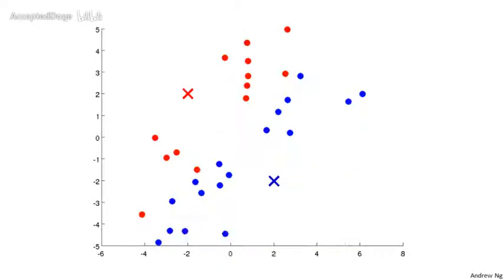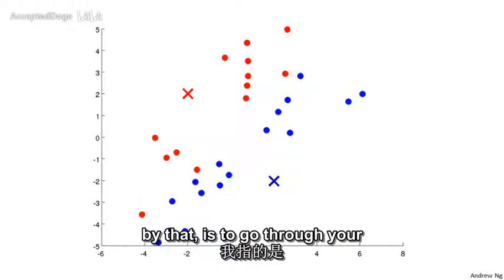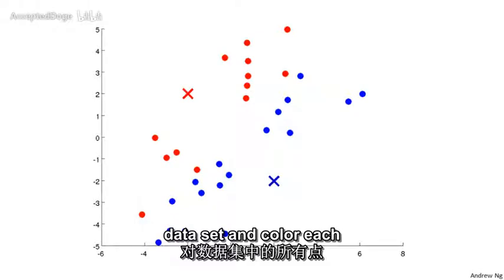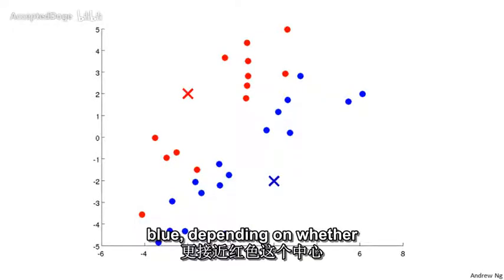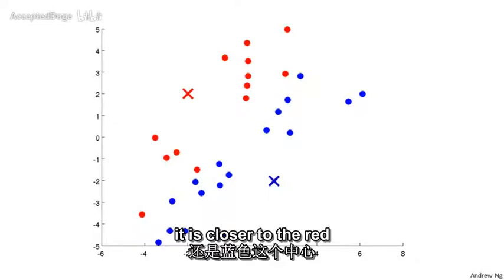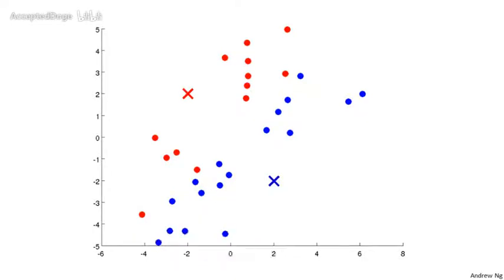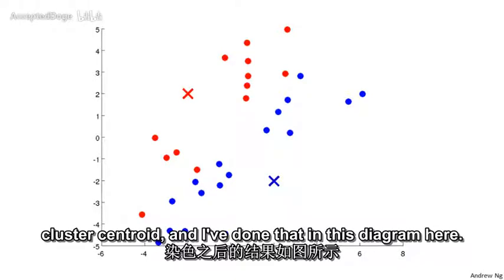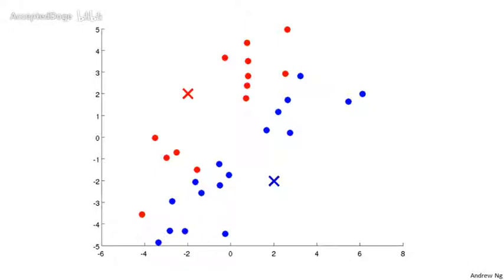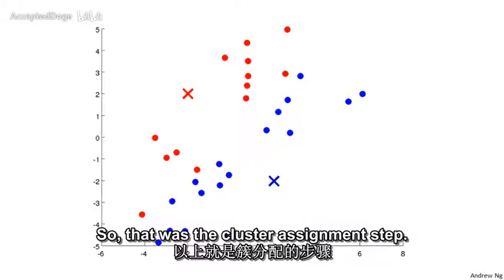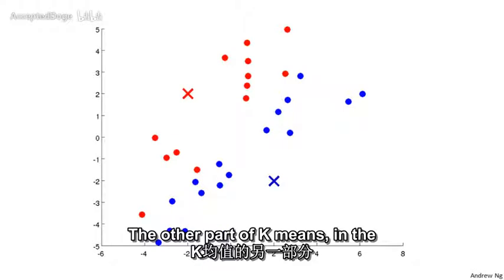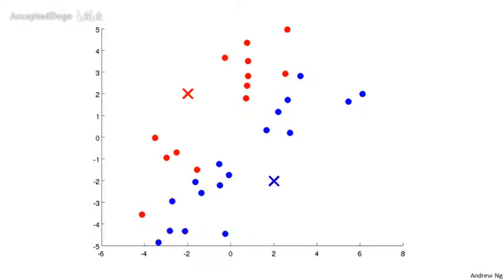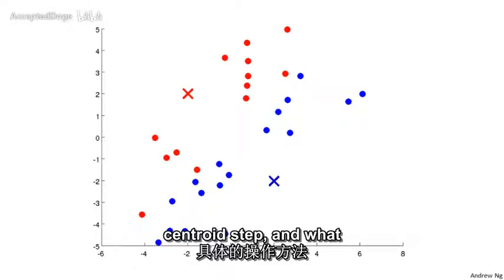Specifically, it's going to go through your data set and color each of the points either red or blue, depending on whether it's closer to the red cluster centroid or the blue cluster centroid. That was the cluster assignment step. The other part of k-means's inner loop is the move centroid step.